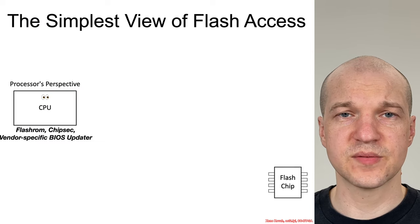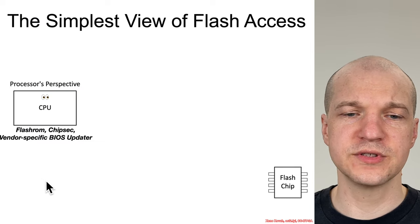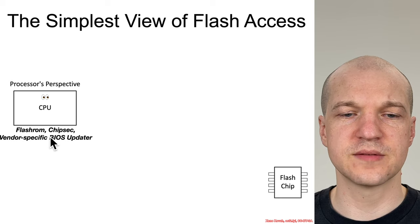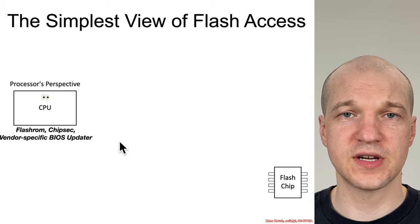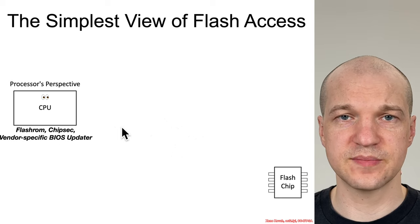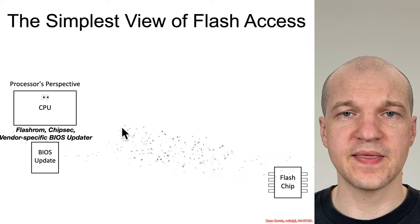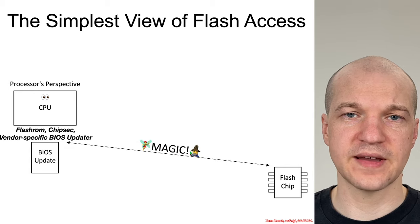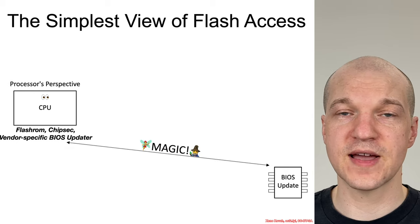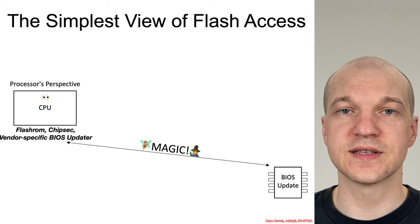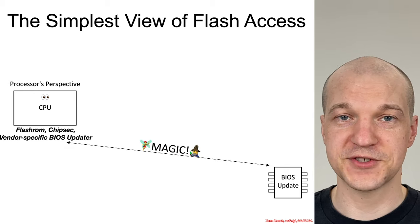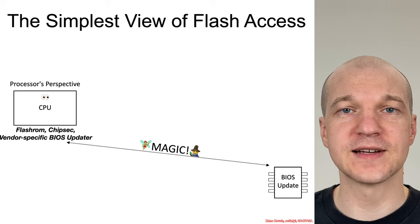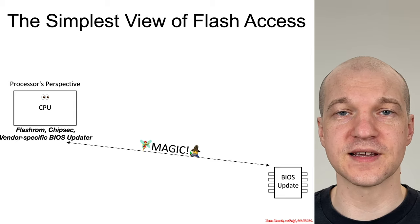In the simplest possible view of the world, you have some tool running on the CPU — like FlashROM, ChipSec, or a vendor-specific BIOS updater — and that takes a BIOS update and just magically somehow writes it to the SPI Flash Chip. We're going to look behind the magic in this section.